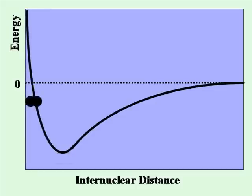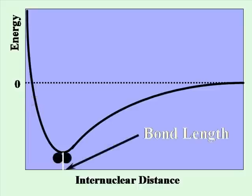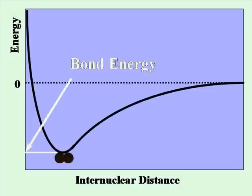If the atoms get too close together, they actually repel each other, and the energy goes way up, making the atom unstable. So they return to the optimum distance, which is called the bond length. The distance between is the bond length, and the energy at that distance is the bond energy.